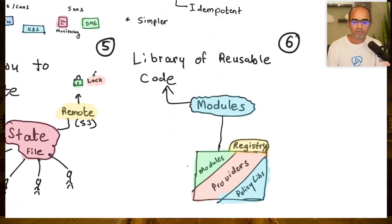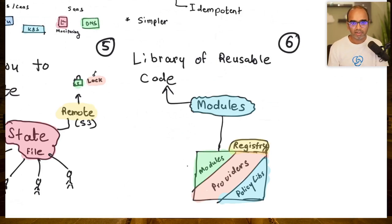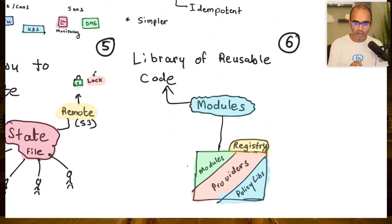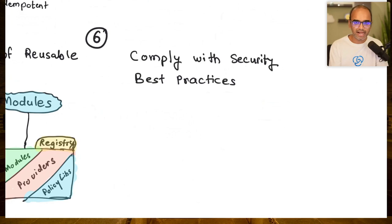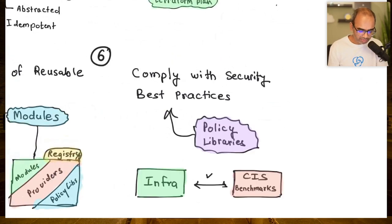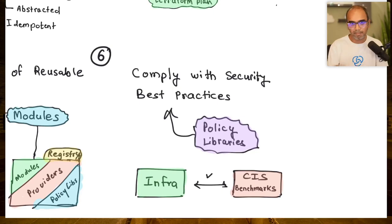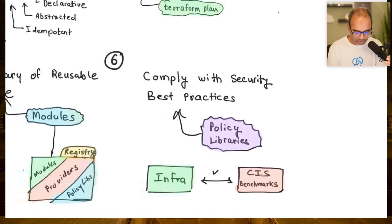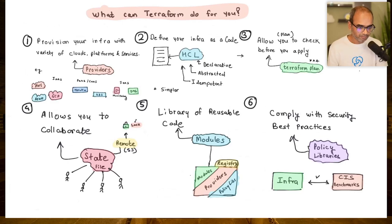Terraform also has a library of reusable code — you don't have to reinvent the wheel. Pre-existing modules are available for AWS, Azure, Kubernetes, DNS systems, and more. You can invoke them and get things done without writing that code yourself. Additionally, you have policy libraries that automate compliance checks and benchmarks, automatically configuring your system to bring it into compliance.